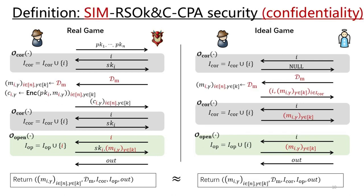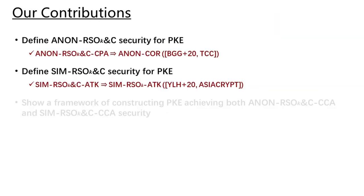The confidentiality notion under the same type of corruption is similarly defined. The main difference is that the distribution of public keys is replaced with a distribution of messages, and all the other details are similarly modified. We then show that anonymous RSO-K&C CPA security implies anonymous COR security, and the corresponding confidentiality implies the standard RSO-K security.